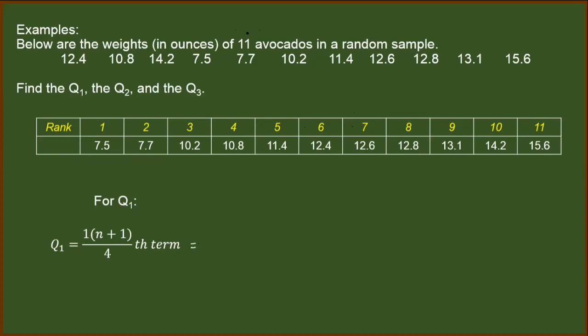We have here 11 avocados. So we have 1 times 11 plus 1 over 4. So we have here 1 times 12 over 4. 1 times 12 is 12 over 4. 12 over 4 is 3. Meaning, we will look at the third value.